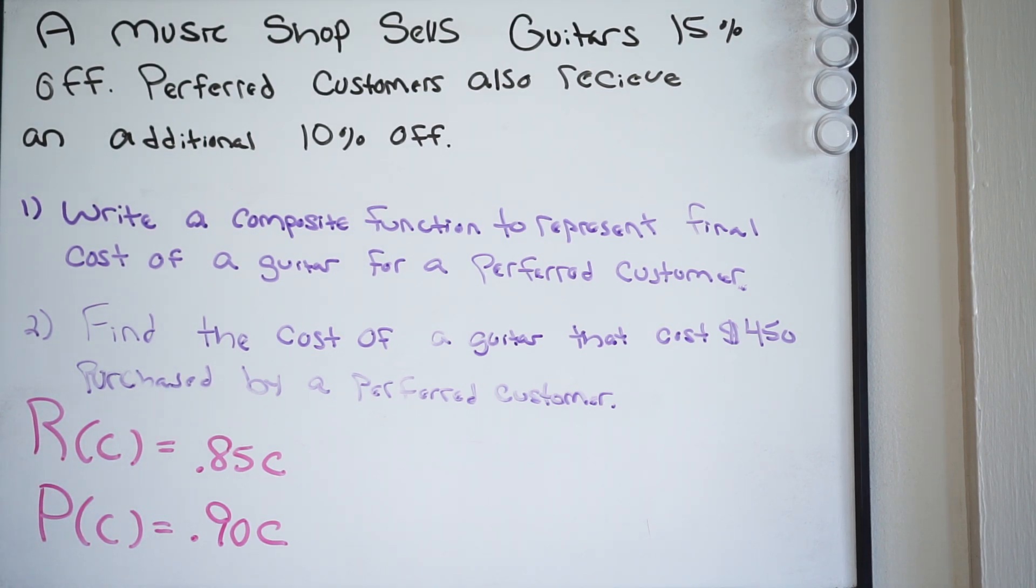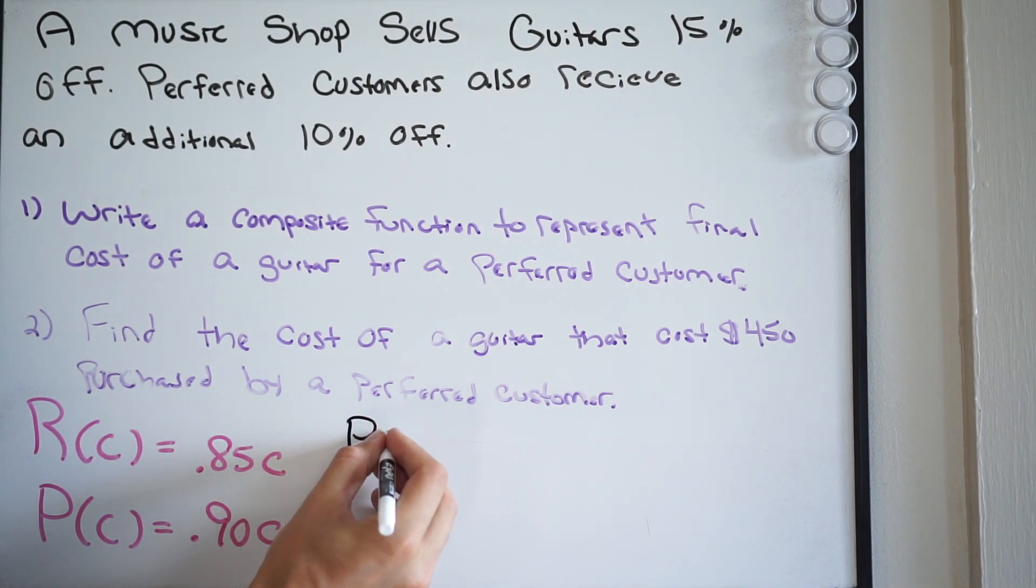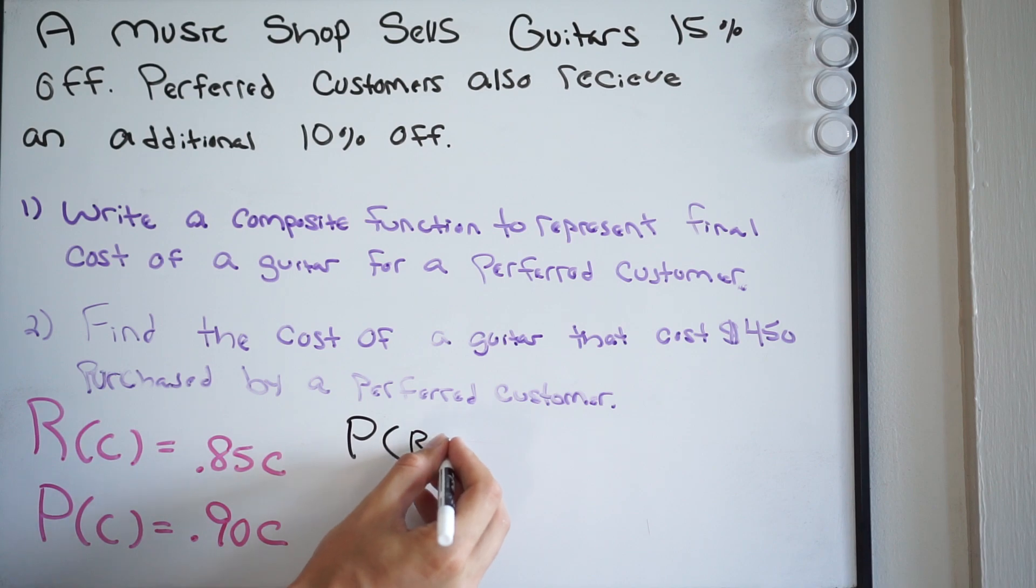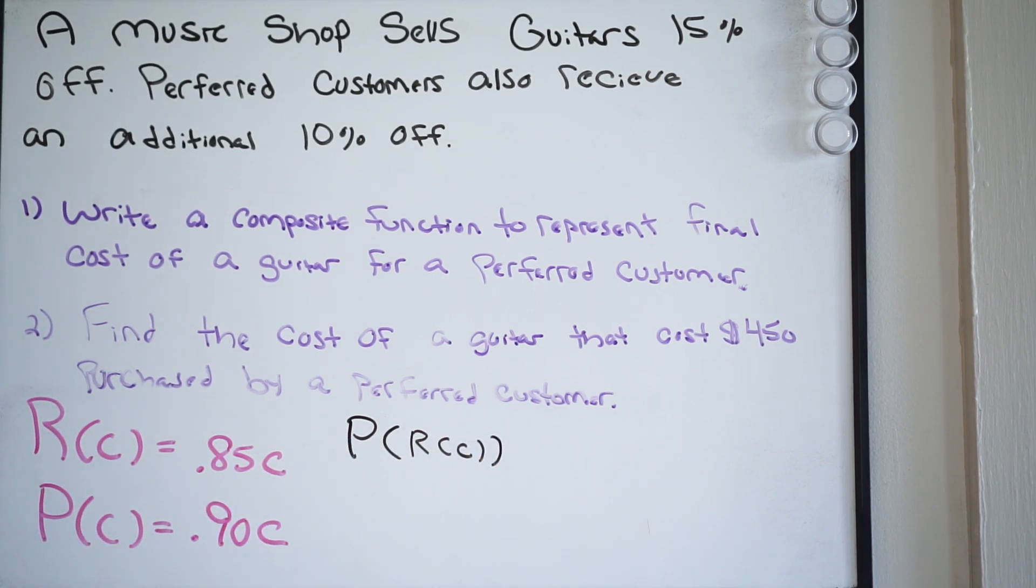So that's going to look like this. We'll have P compose R of C. And so let's go ahead and go through this.